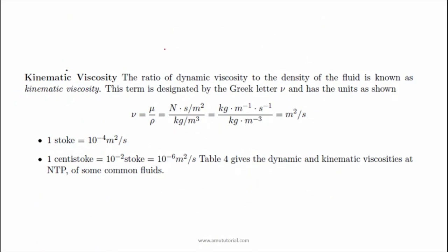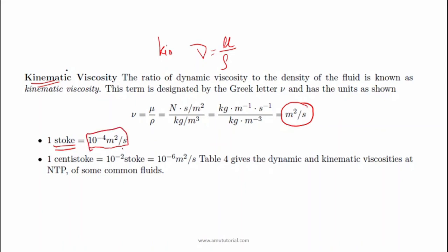Another type of viscosity is kinematic viscosity, which is the ratio of dynamic viscosity to the density of the fluid, denoted by the symbol nu. The SI unit for kinematic viscosity is meter square per second. It is also expressed in Stoke, where 1 Stoke equals 10 to the power minus 4 meter square per second.